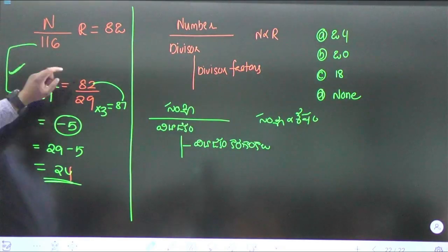5 what's your answer 24 whether 29 3 is 87, 87 minus 82 is minus 5 remainder minuses is 29. 29 minus 5 is 24. 24 sudden number divided by 128 remainder is 88, the same number divided by 32 then find the remainder.